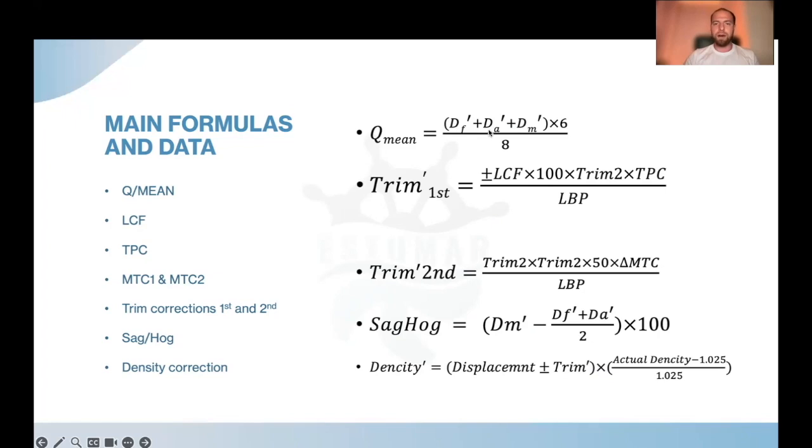So how does it work? Q-MEAN, remember I told you about this. Here we go. We have draft forward plus draft aft plus draft middle, then we multiply by six and then we divide this by eight. That's draft forward corrected, draft aft corrected, draft middle corrected. So mean of forward, mean of aft, mean of middle, multiply by six and then divide by eight. This is Q-MEAN.